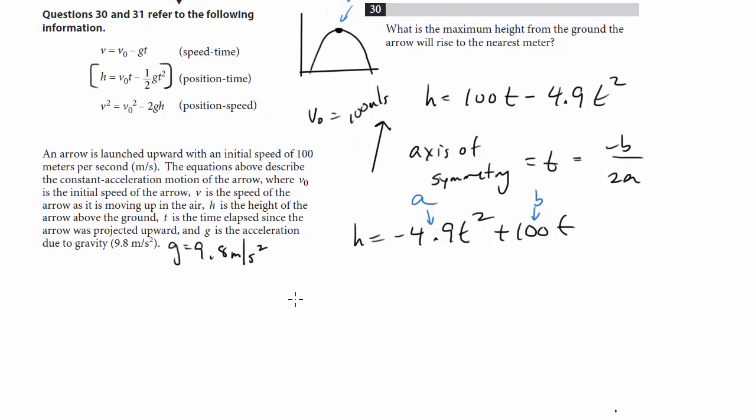So let's rearrange this so we can get it into the proper form, because it should look like this, where this is a and this is b. So we're going to get t equals 100 over 4.9, negative 4.9 times 2. And actually we're going to make this negative 100 because it's minus b. So the negatives are going to cancel. We're going to get 100 over 9.8.